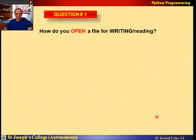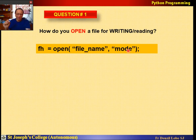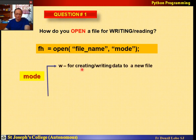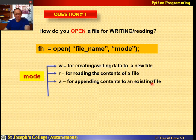How do you open a file for writing and reading? We use fh equals open, give the file name and mode. These are the various modes: 'w' means creating or writing data to a new file; 'r' is for reading contents from a given file; 'a' is for appending contents to an existing file. We will be dealing with all of these.